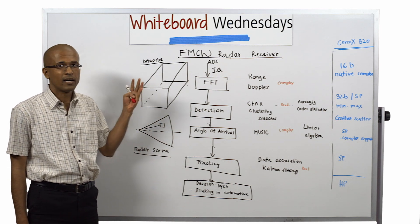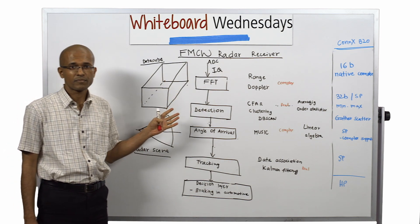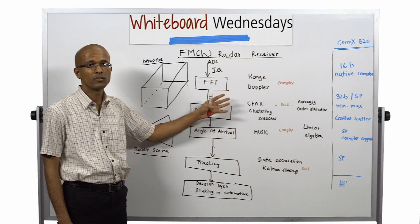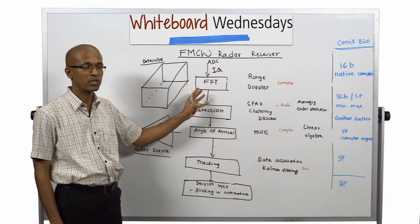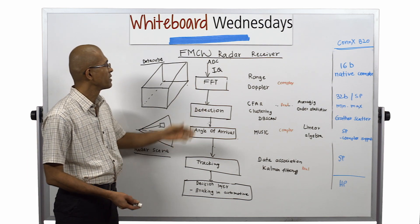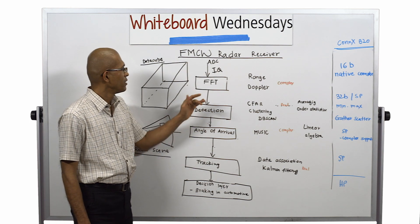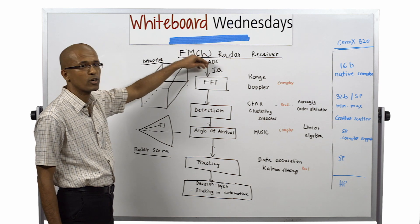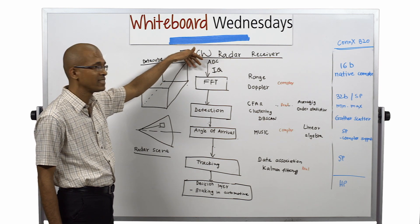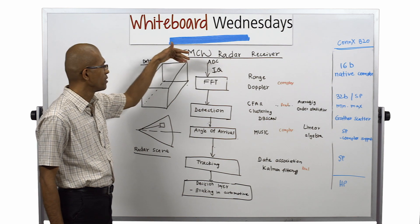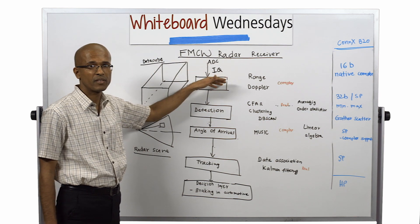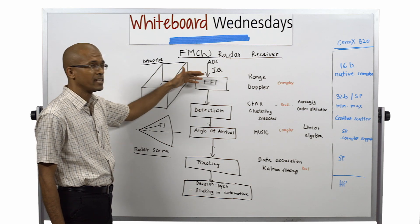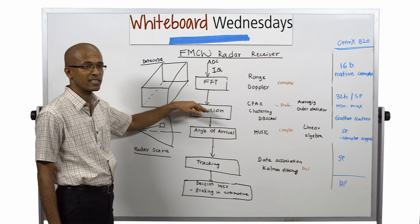I am going to start with the FMCW radar receiver and then talk about how the B20 features are going to be used in those particular signal processing algorithms. Here is the FMCW radar receiver block diagram. The FMCW receiver receives IQ complex samples from the front-end ADCs. Those IQ samples need to be processed for the range and Doppler FFTs, which will give the range and velocity information on the detected targets.